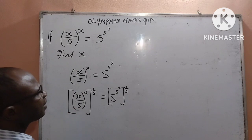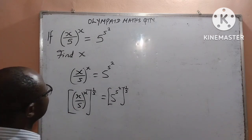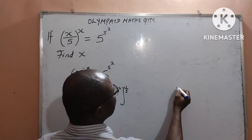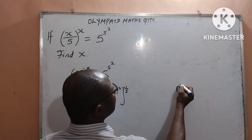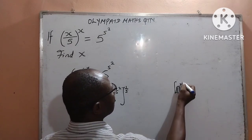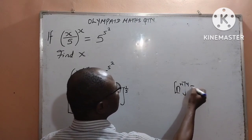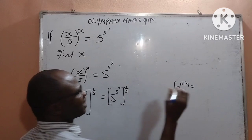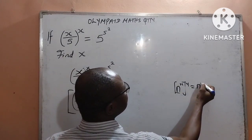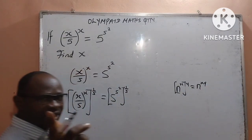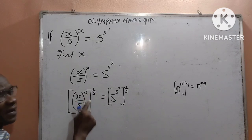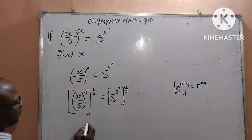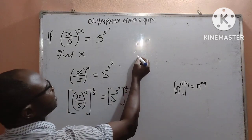That is what I have done. I will apply the product law of indices, which says: if I am given n to the power of x, everything to the power of y, we simply multiply the powers, and that gives us n to the power of x times y. I am going to apply that here.